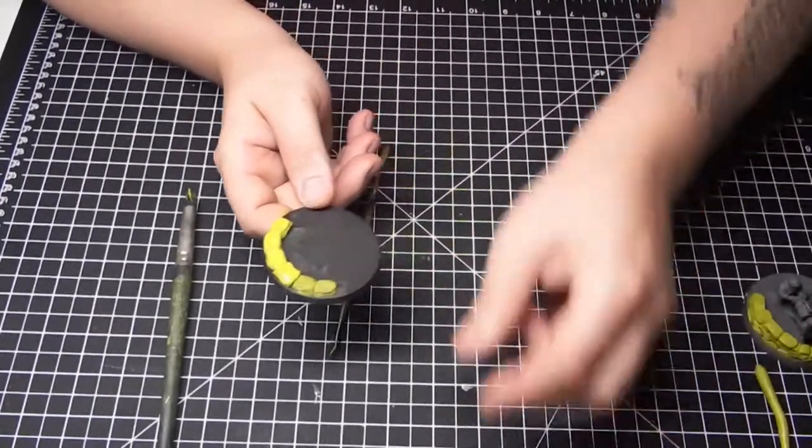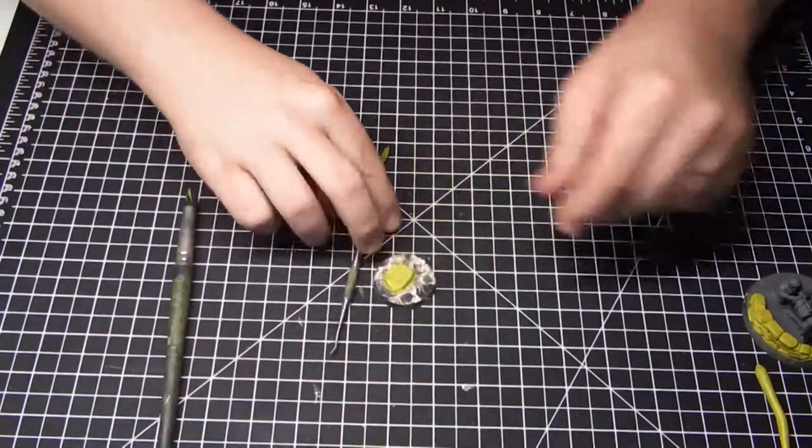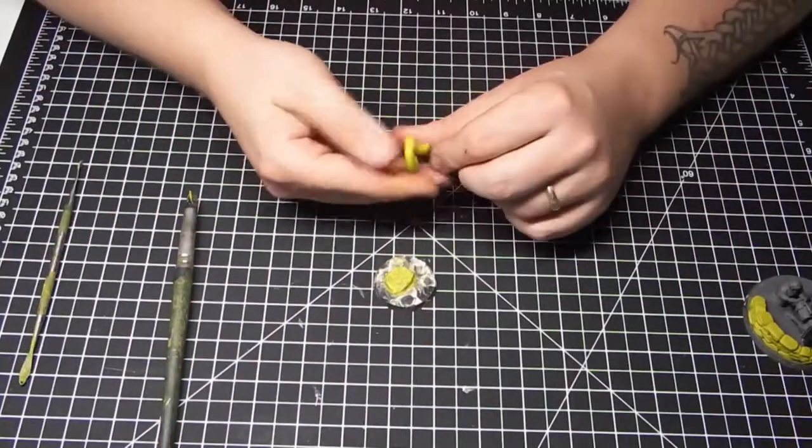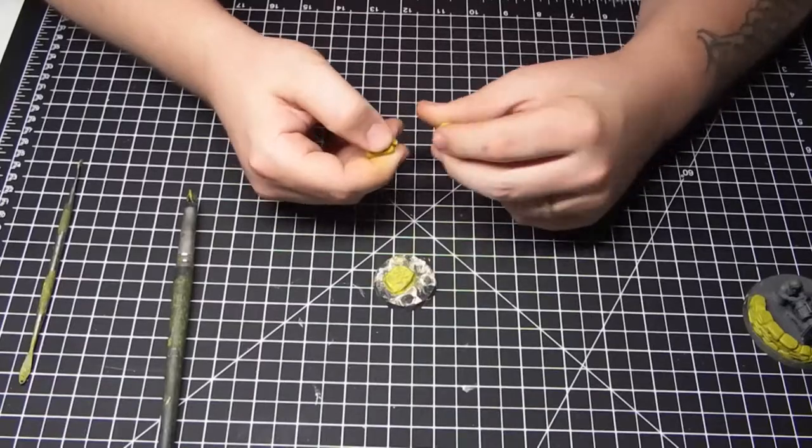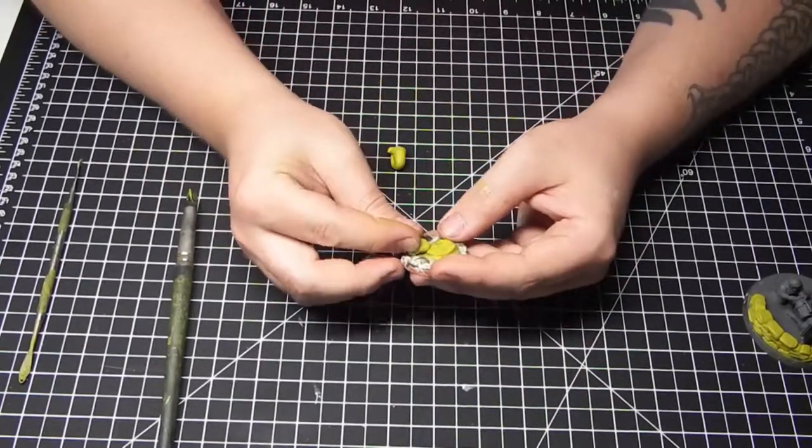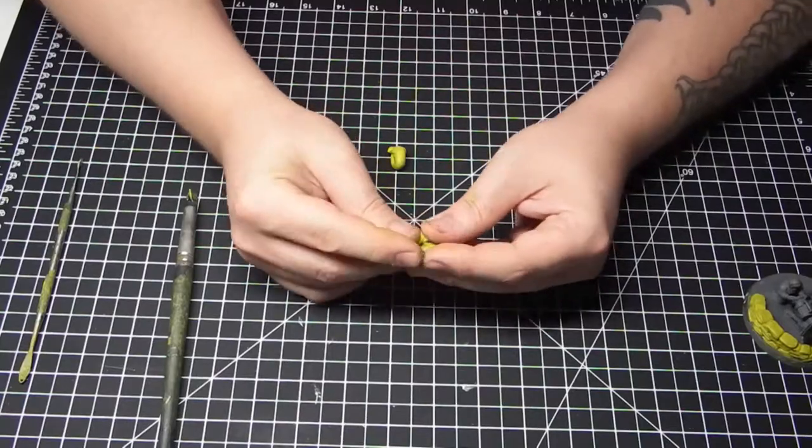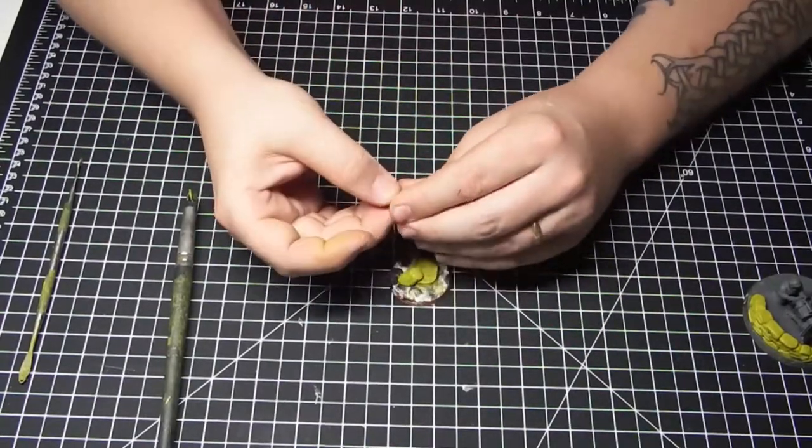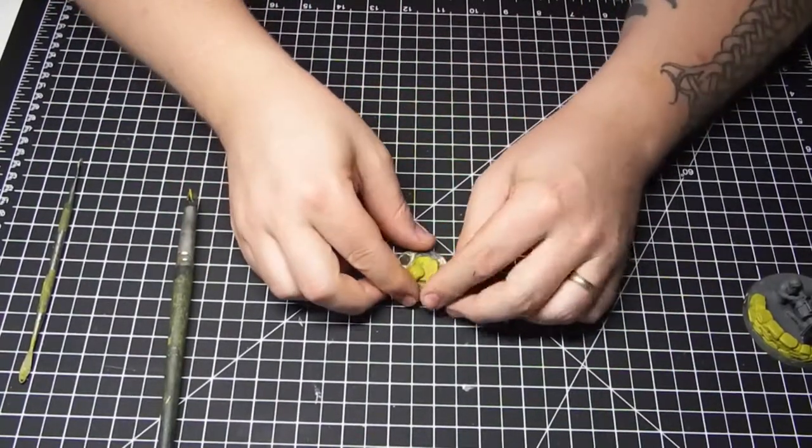Another thing you can do is sculpt rocks or texture. A lot of times people will use slate or whatever they like to build their rocks up, but whenever I have a character and I want to put them on a particular base, I like to build up a rocky base. This is a great project because the more putty you use, the more rocks you can create.